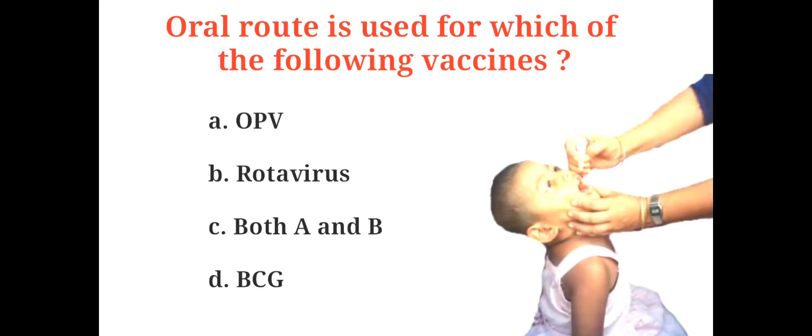Oral route is used for which of the following vaccines? A. OPV, B. Rotavirus, C. Both A and B, D. BCG. And the correct answer is C. Both A and B.